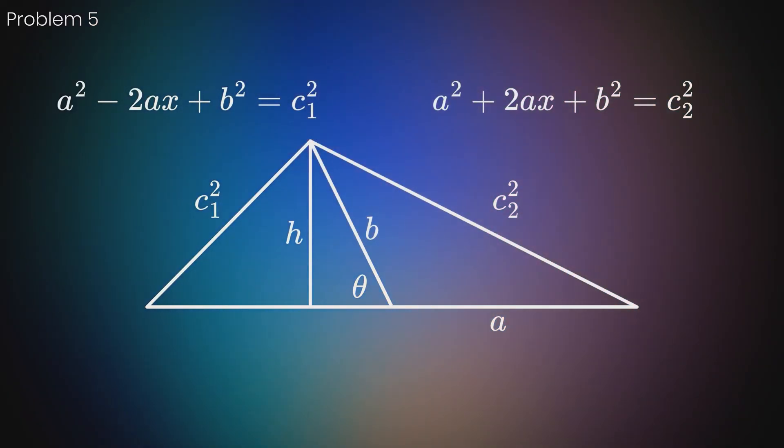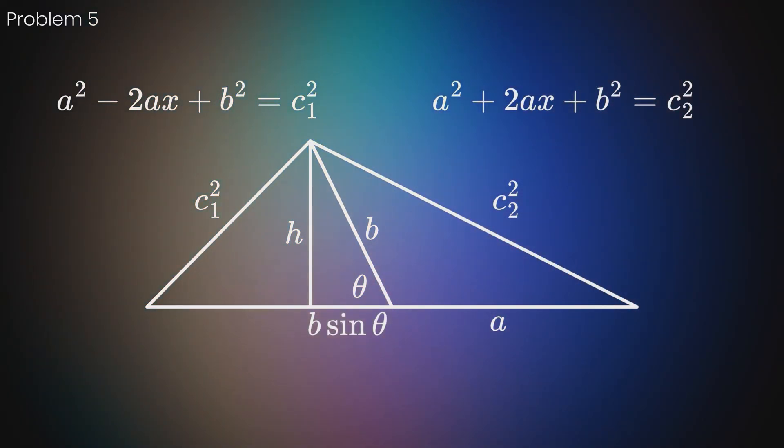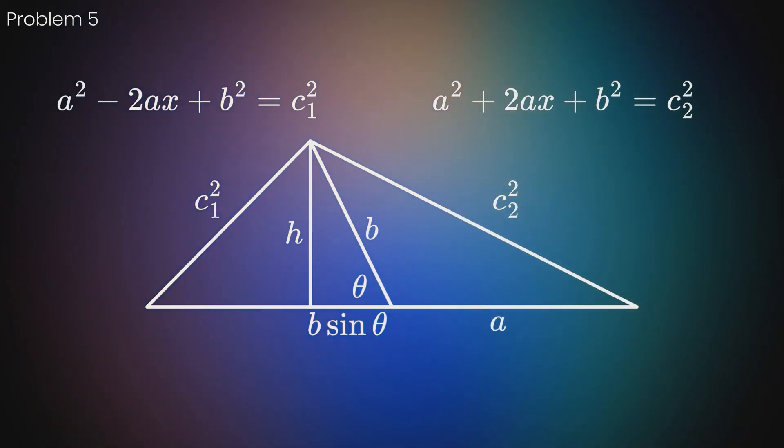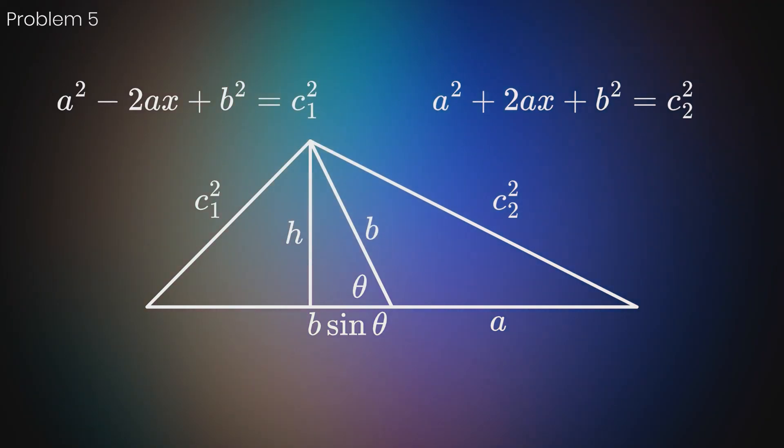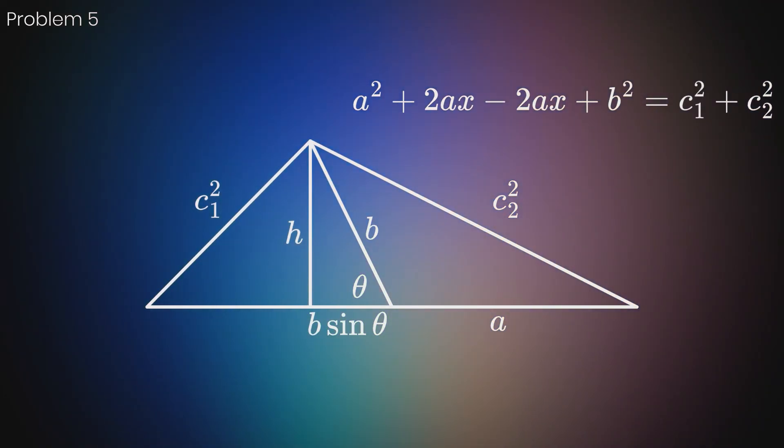Since the length of x is dependent on the angle and we don't know the angles, we want to get rid of it. Notice that the 2ax term is positive in the left equation and negative on the right. This means they will cancel out when both equations are added, leaving us with the following.